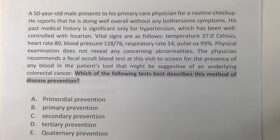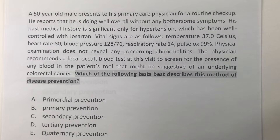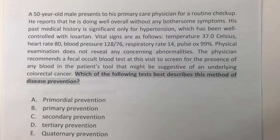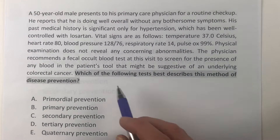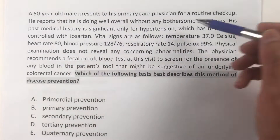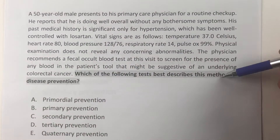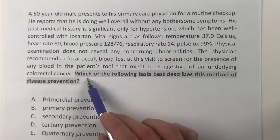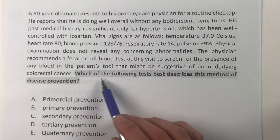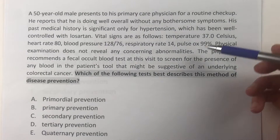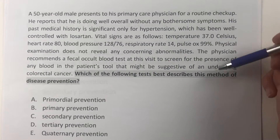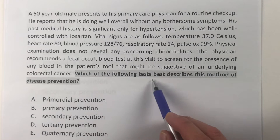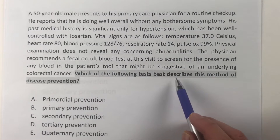All right guys, we have about four questions here — these were sent in by some people who wanted them reviewed. The first tip: when you see a long problem, make sure you go down to the very last sentence, because that's where the question is, and that'll let you focus on what's really important up top. So — which of the following best describes this method of disease prevention?